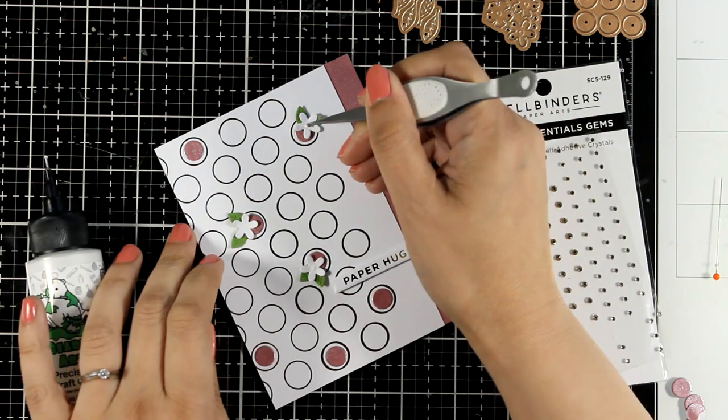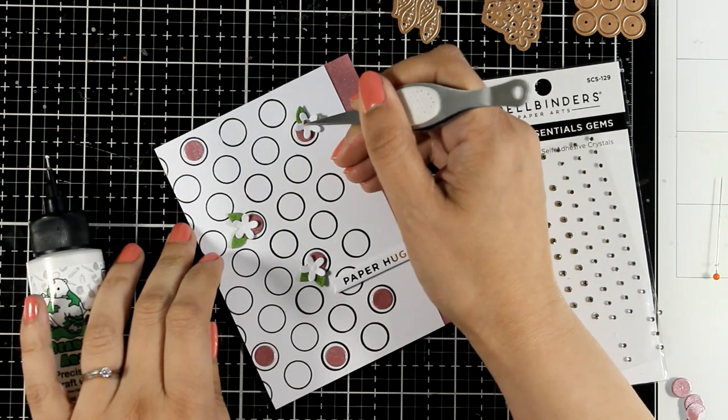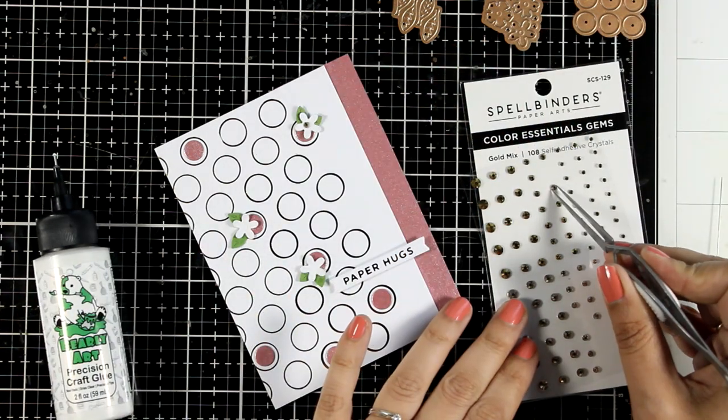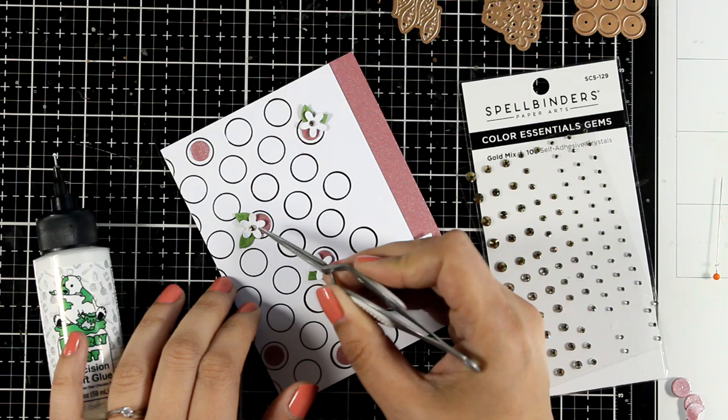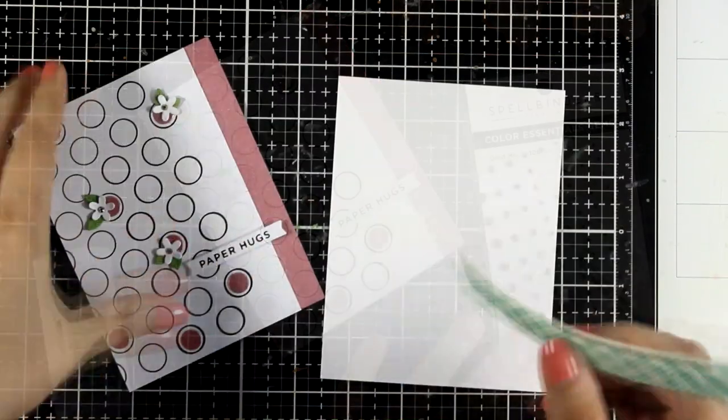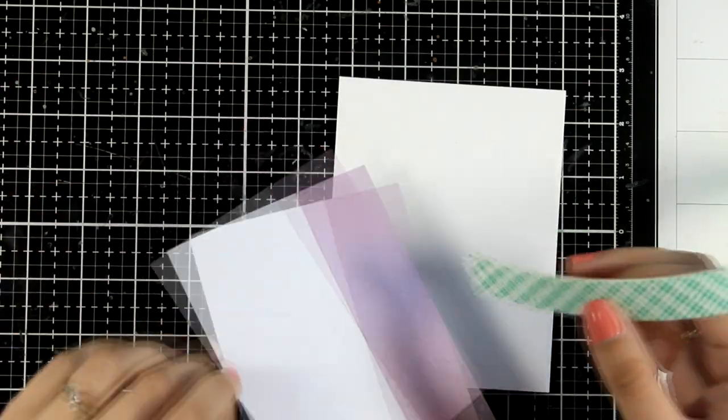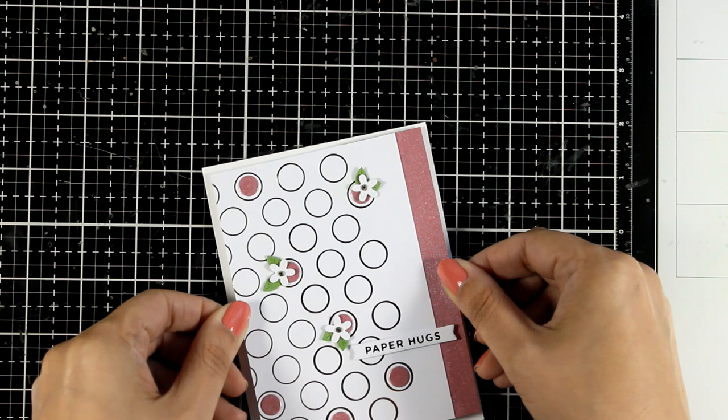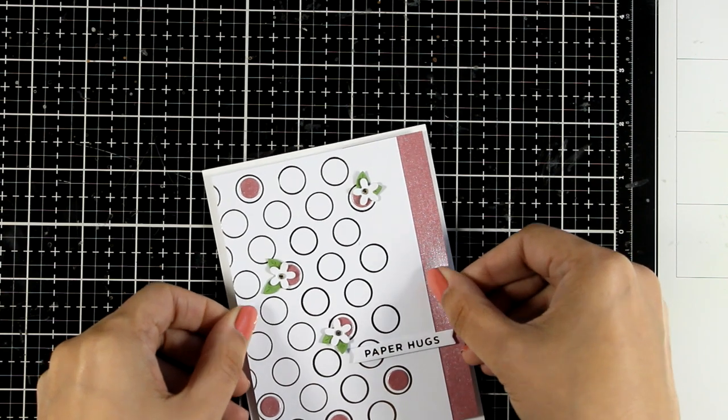I did finish it off by adding golden crystal gems at the center of the tiny little flowers. And these are self-adhesive. However, just to be safe, I did add a dot of glue at the center of all those flowers. And finally, all that's left to do is to stick this panel on top of a pre-folded card that's four and a quarter by five and a half. For that, I did use foam tape.